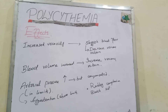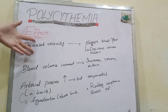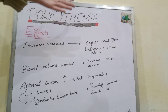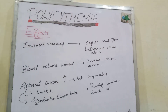What happens to a viscous substance? A viscous substance can flow slowly and sluggishly. So the same happens here: our increased blood viscosity causes sluggish blood flow. If there is sluggish blood flow, there will be decreased venous return, because the blood is too slow to return towards the heart.